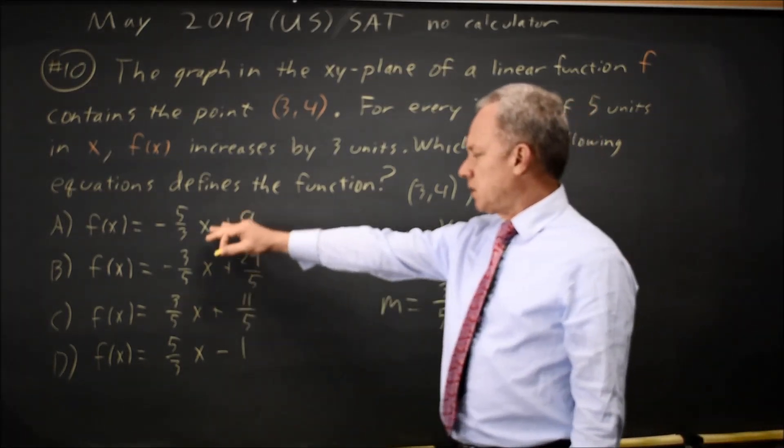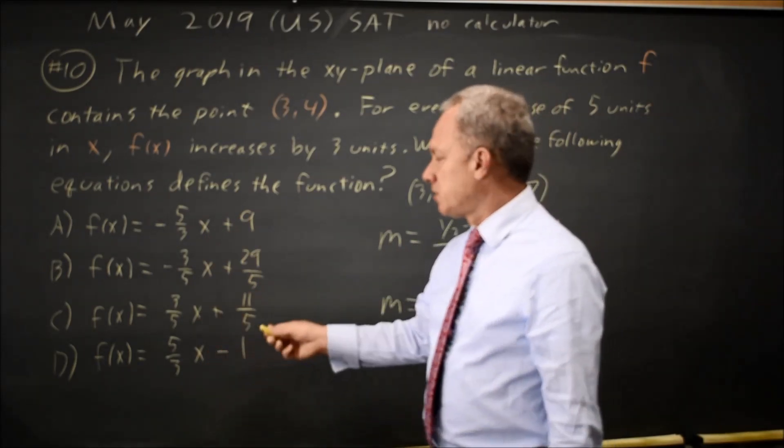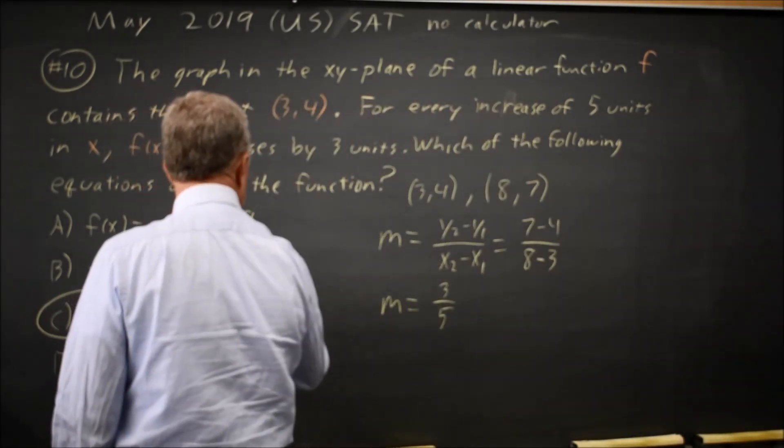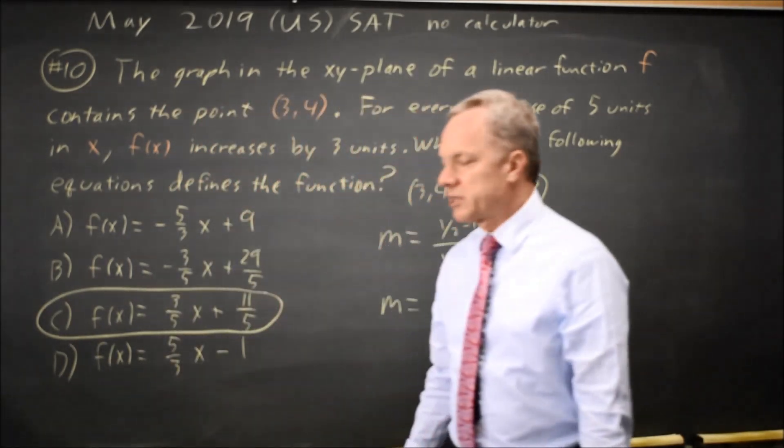And I notice that my choices all have different slopes. Choice C is the only one that has a slope 3 over 5, so that would be the correct answer.